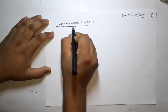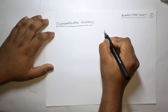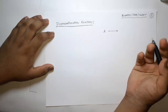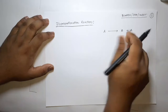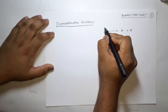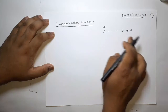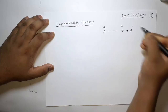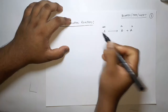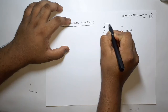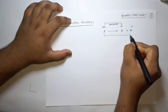Disproportionation reactions: let's say you have an element A, and it undergoes a reaction forming two different products. The oxidation state of A in the reactant is initially some value x. In the two products, the oxidation states of element A are some value 'a' and some value 'b'. If 'a' is lesser than x, that may be the reduction.